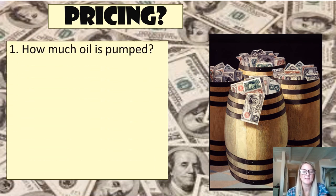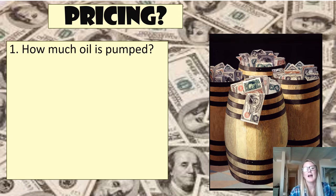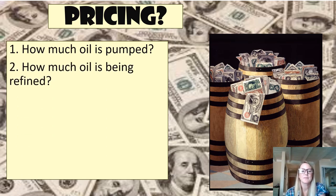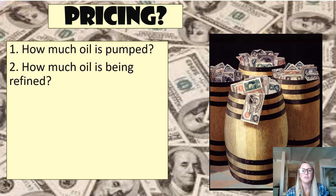What else goes into the price of a barrel of oil? Right now the price of a barrel might be $80 — how is pricing determined? Number one, it's how much oil is being pumped from the ground. The more oil being pumped, the higher the supply and the lower the price. Two, how much oil is being refined? If refineries are shut down because of a hurricane — which happens a lot in Texas — you can expect the price of gas to increase because refineries aren't able to turn crude oil into gasoline.